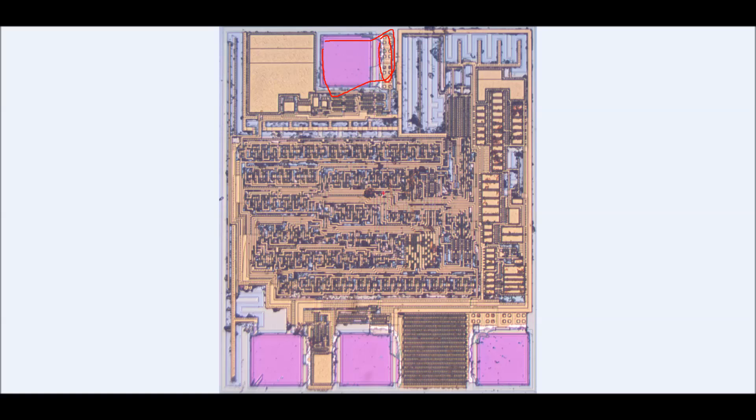You've got to carry current and each via can't carry much current. Then of course you come down here, you see the same thing. Okay. Oh boy. Right. There it is. And here's another power pad. So this one could well be ground. This one could well be plus V.